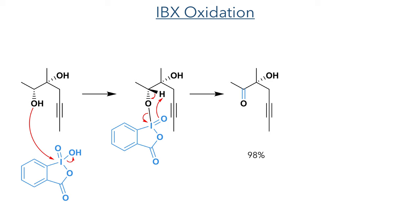The secondary alcohol produced by the Sharpless reaction was oxidized to a ketone using IBX. This iodine-based reagent acts as an electrophile and is attacked by the alcohol, forming a highly electrophilic intermediate which allows the oxygen bound to the iodine to abstract a proton and oxidize the substrate to a ketone in a 98% yield.